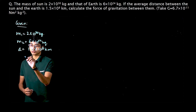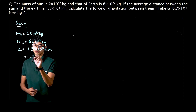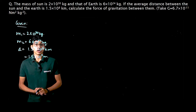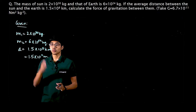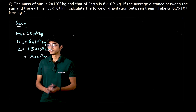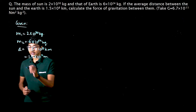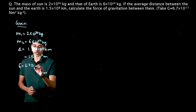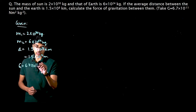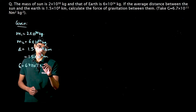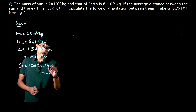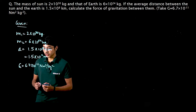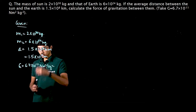Now we know that the SI unit of distance is not kilometers, it is meter. So we have to convert this. So this will become 1.5 into 10 raise to 11 meters, because 1000 meters is one kilometer. And after that it is given that capital G, the gravitational constant, is 6.67 into 10 raise to minus 11 newton meter square per kg square. This is in SI unit so no problem over here.